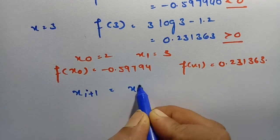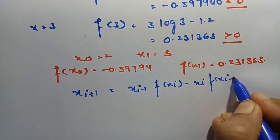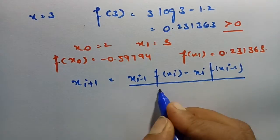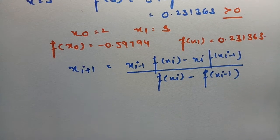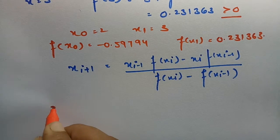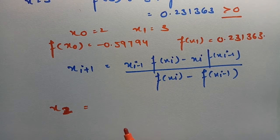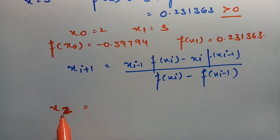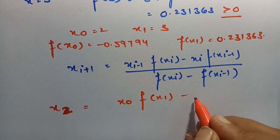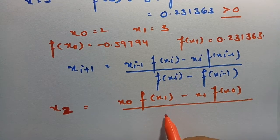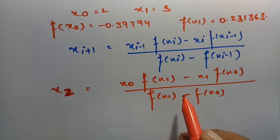In order to find x₂, we use the formula: x_{i+1} = x_{i-1}·f(xᵢ) − xᵢ·f(x_{i-1}) divided by f(xᵢ) − f(x_{i-1}). A simple way to remember: subtract 2 from the subscript — so 2 minus 2 is 0, giving x₀; the next number after 0 is 1, giving x₁. Interchange and bring the function values down accordingly.